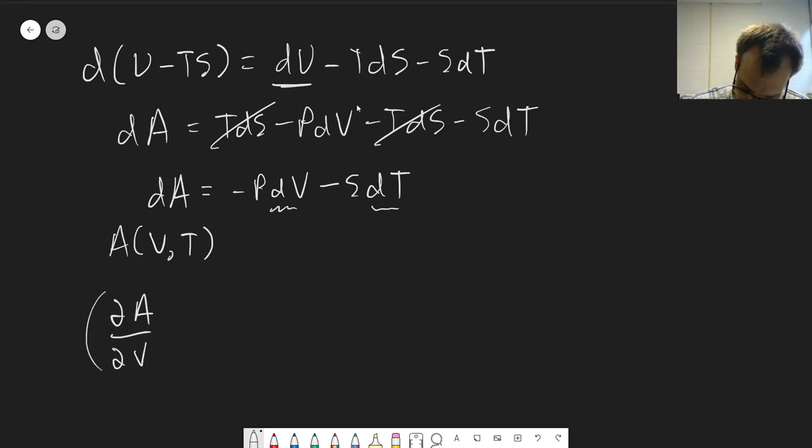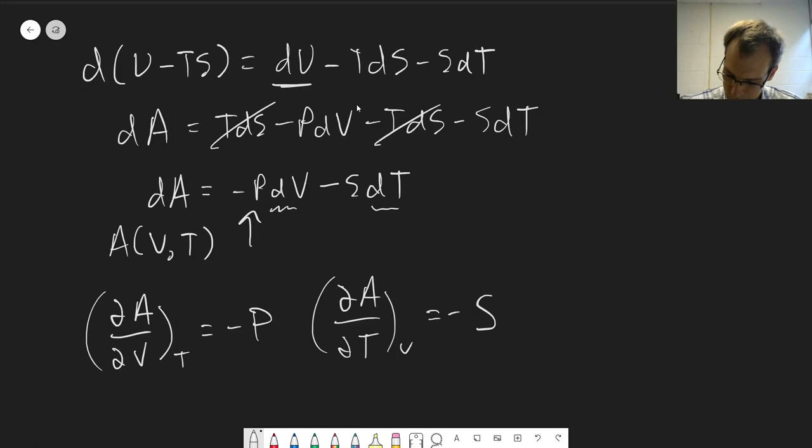Using the same logic as before, dA dv at constant t is equal to negative pressure. That comes from this coefficient here. dA dt at constant v is equal to negative entropy. And then our Maxwell relation from the cross derivatives.